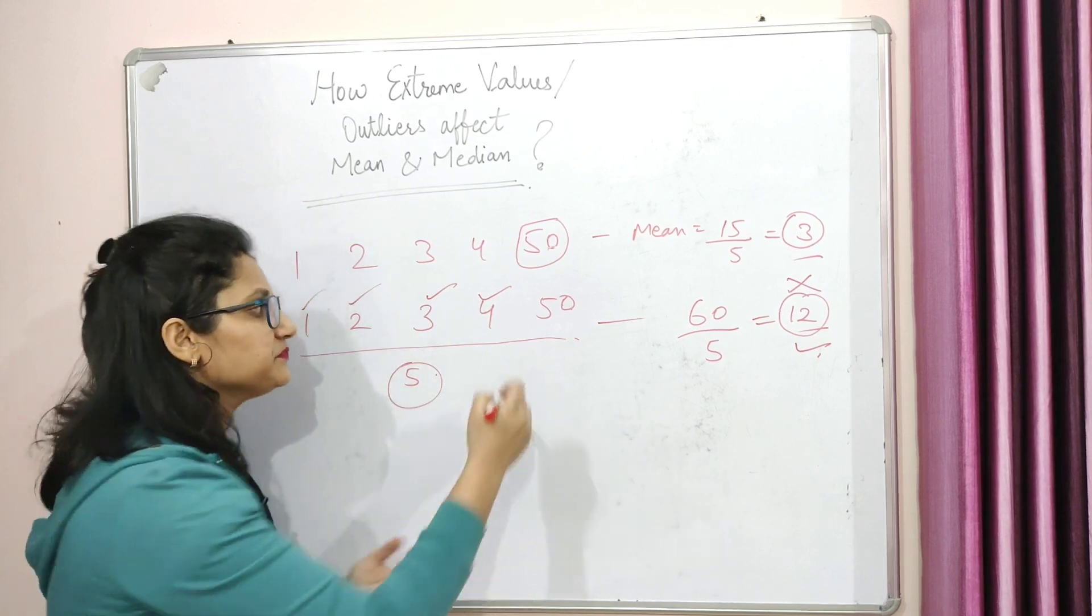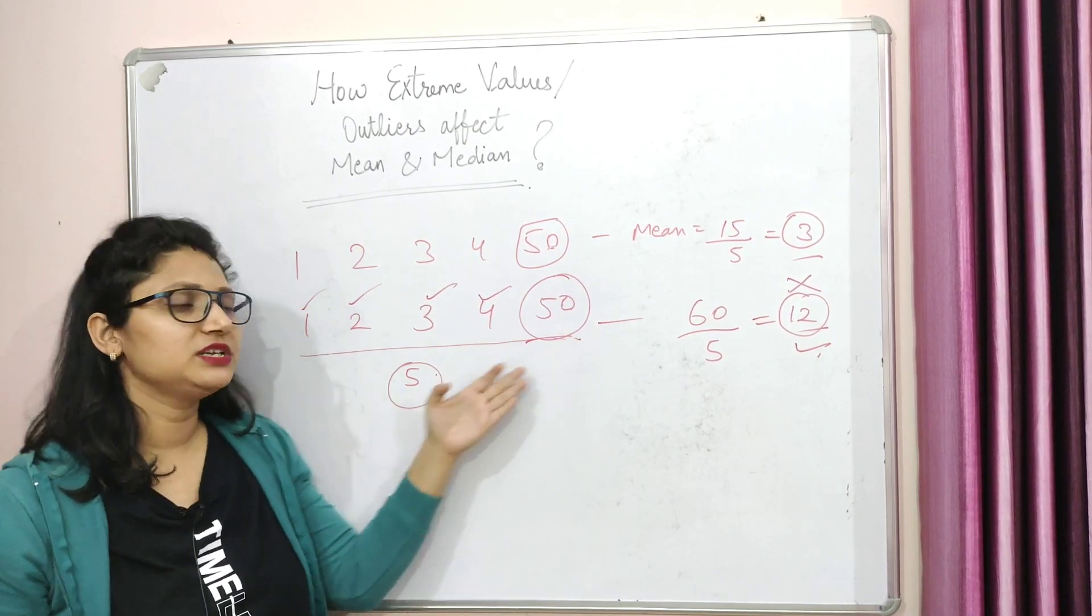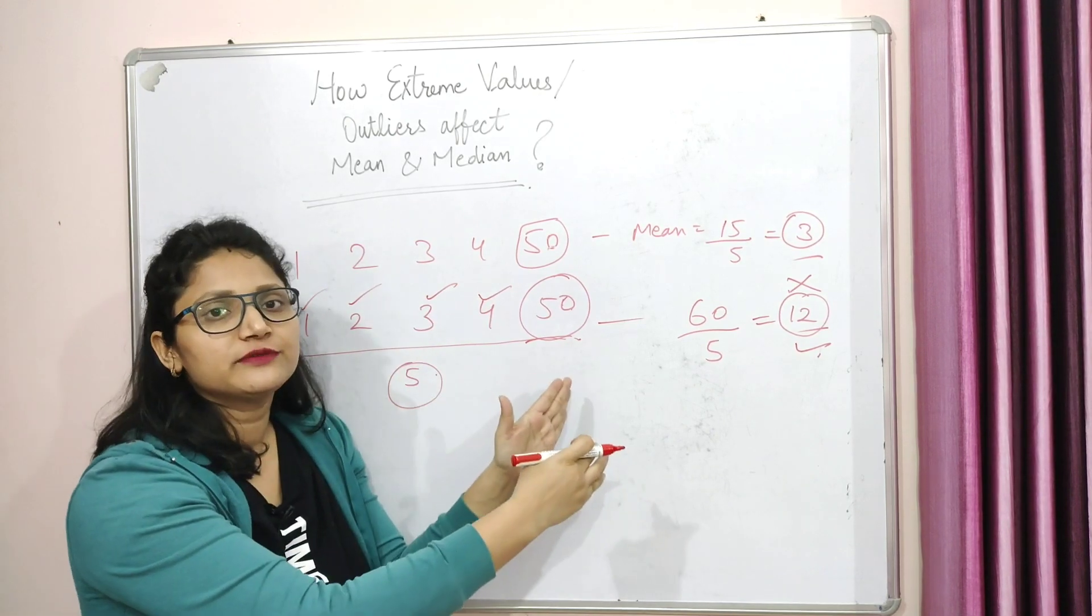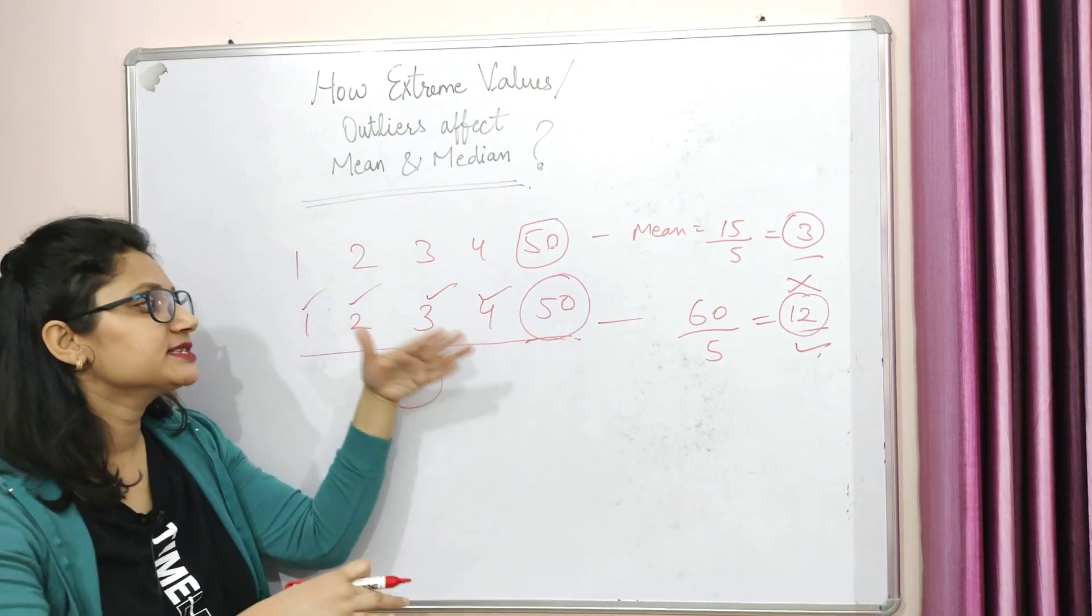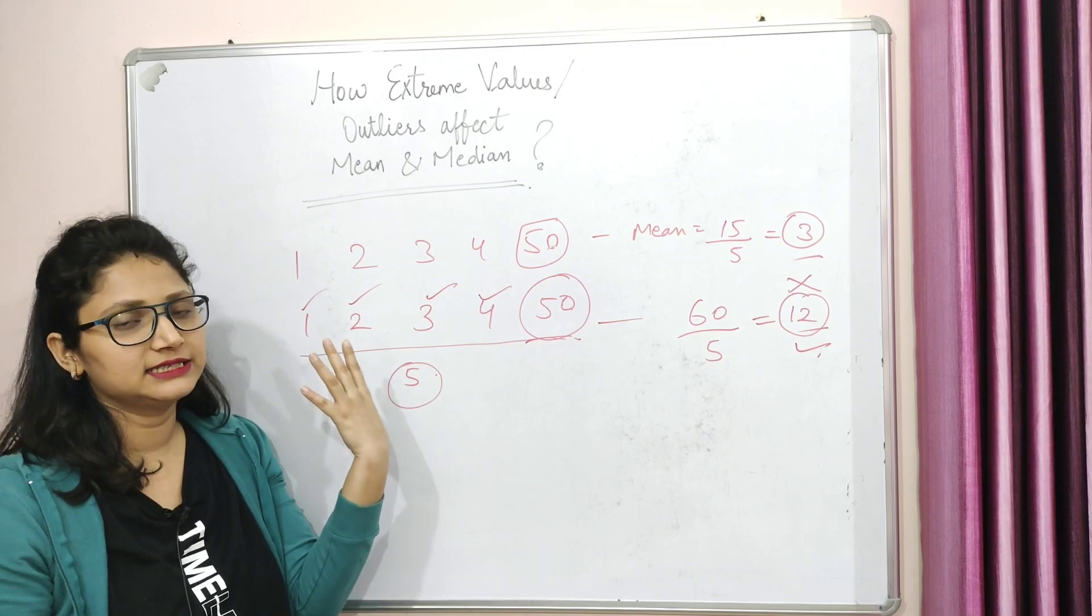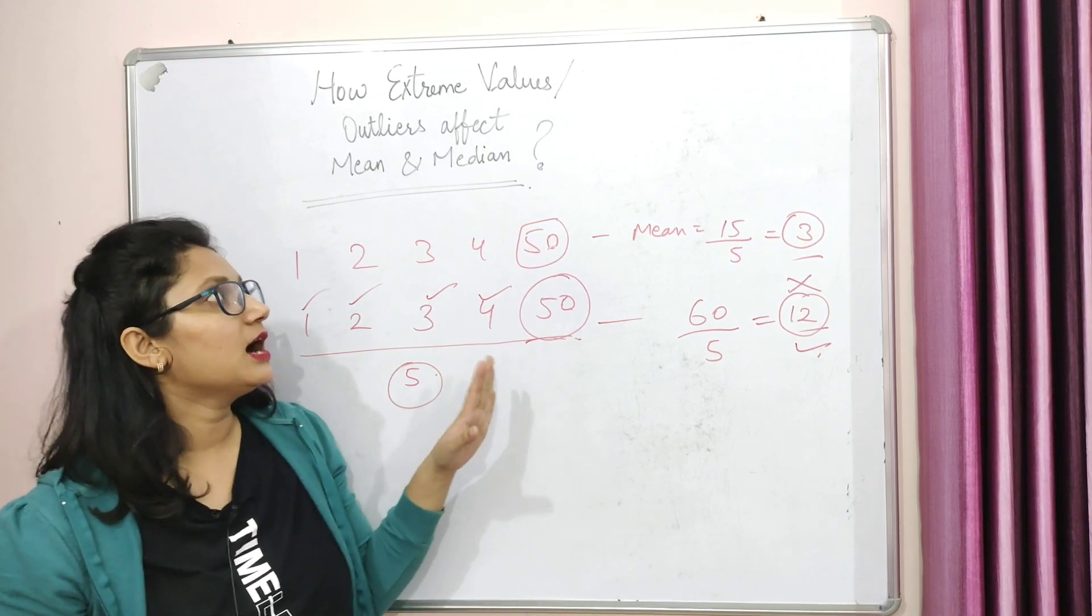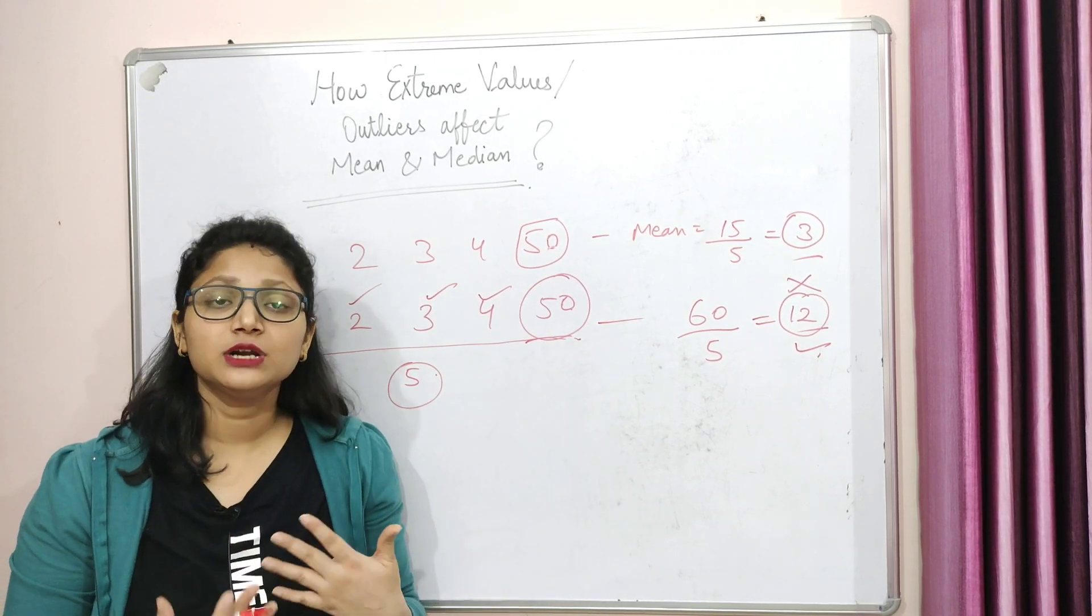And who has affected this mean? So if you look at the extreme values here, the extreme value has affected it. So this extreme value, like if you were at the higher end, then your mean shifted to the higher side, 3 to 12. If you add some extreme values to the lower end, then your mean shifts to the lower side. Okay, so this is how extreme values or outliers affect your mean.